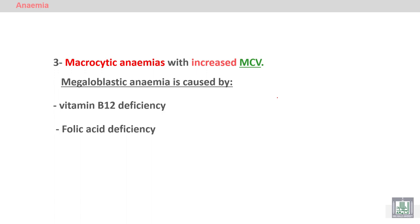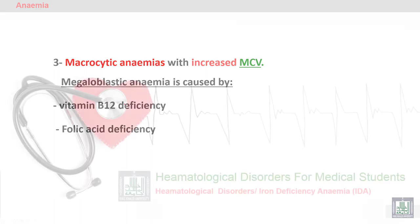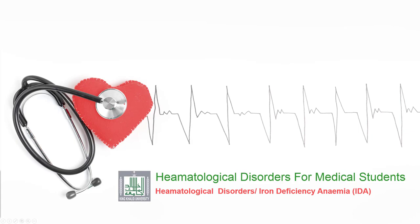Macrocytic anemia presents with increased MCV and occurs in megaloblastic anemia due to vitamin B12 deficiency and folic acid deficiency.